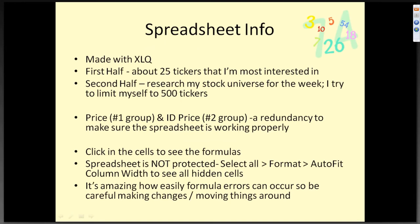The spreadsheet that I made — I'll just give you a brief rundown on it. It's made with XLQ. The first half has about 25 tickers; they're the ones I'm most interested in. The second half I use for researching my weekly stock universe and I try to limit it to 500 tickers — any more than that, it's too hard to keep up. The price in the first grouping is also repeated in the second group as a redundancy to make sure the spreadsheet is working properly. If you want to see what the formulas are, you can just click into the cells because the spreadsheet isn't locked. I leave it unlocked so you can experiment with it.